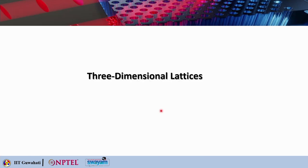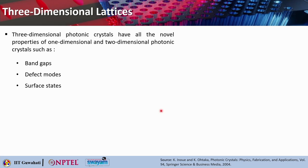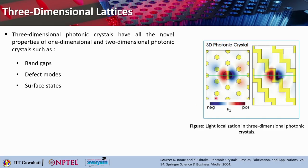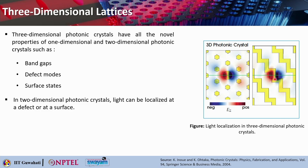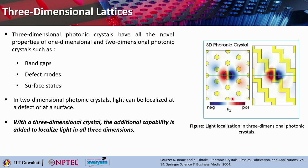Three-dimensional Photonic Crystals have the same novel properties seen in 1D and 2D Photonic Crystals, such as band gaps, defect modes, and surface states. Light localization inside a 3D Photonic Crystal can be viewed from the top as a 2D pattern, while from the side one can see where the localization of the electric field takes place. In 2D Photonic Crystals, light can be localized at a defect or surface, but 3D Photonic Crystals add the capability to localize light in all three dimensions, allowing a micro-cavity or resonator cavity to be formed.